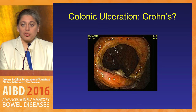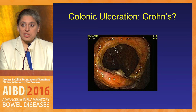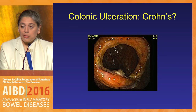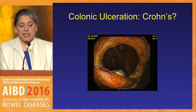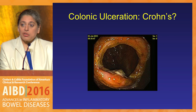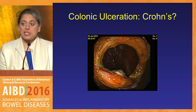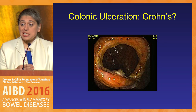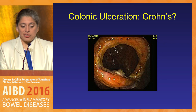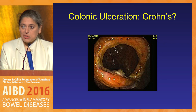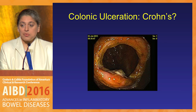Moving into more distal parts of the GI tract — this is a patient who had a resection, and we're looking at their anastomosis where you can see ulcerations. Is this recurrent Crohn's? You'll biopsy it, but it totally depends on where you are biopsying from — the colonic side, the ileal side, or the anastomosis itself. You need to tell your pathologist. It turns out this was the anastomosis itself that was ulcerated, and this is purely ischemia, not recurrent Crohn's disease.